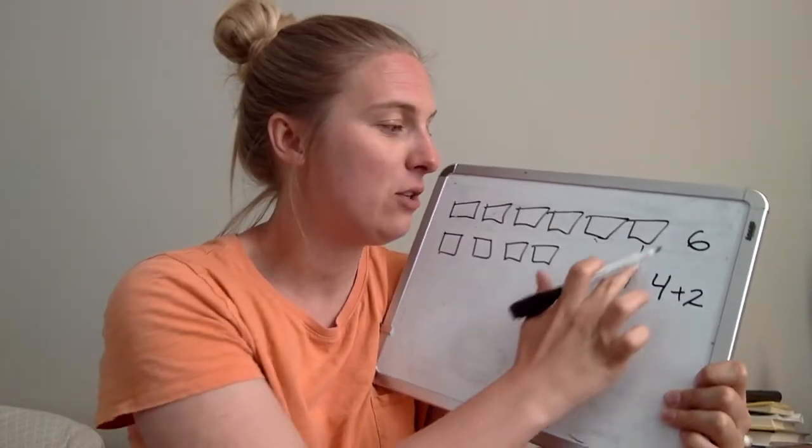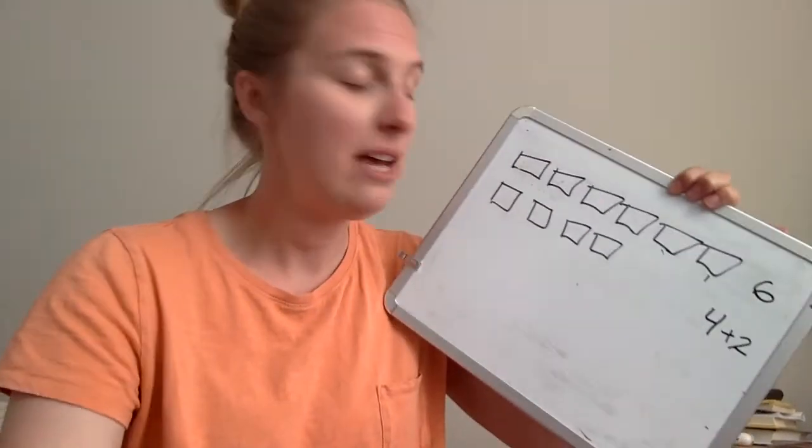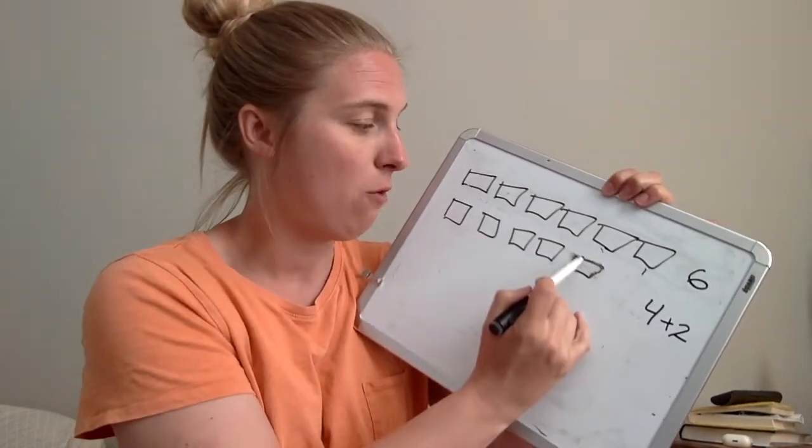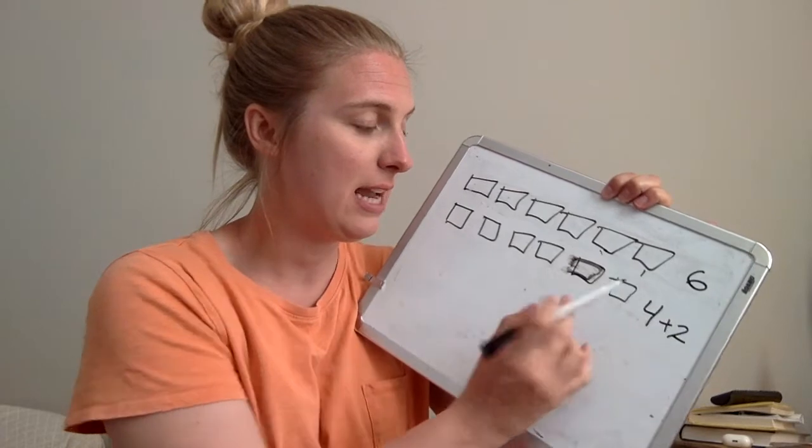So I would be adding two. Another way I could do this is I could hold up six fingers and take away four. One, two, three, four. And I'm left with two. Another way is I could draw how many more? I have four, so I count on. Four, five, six. I added two more.